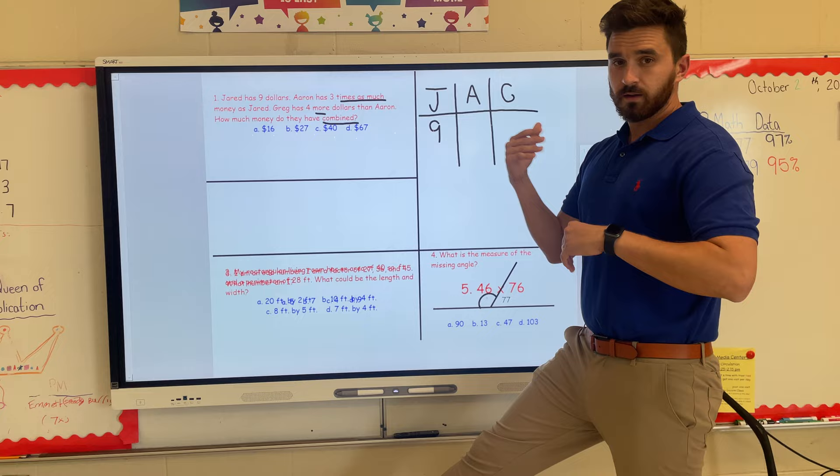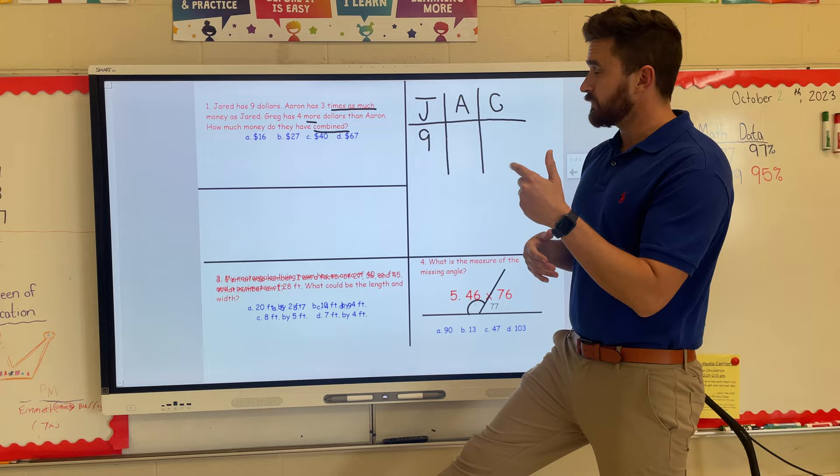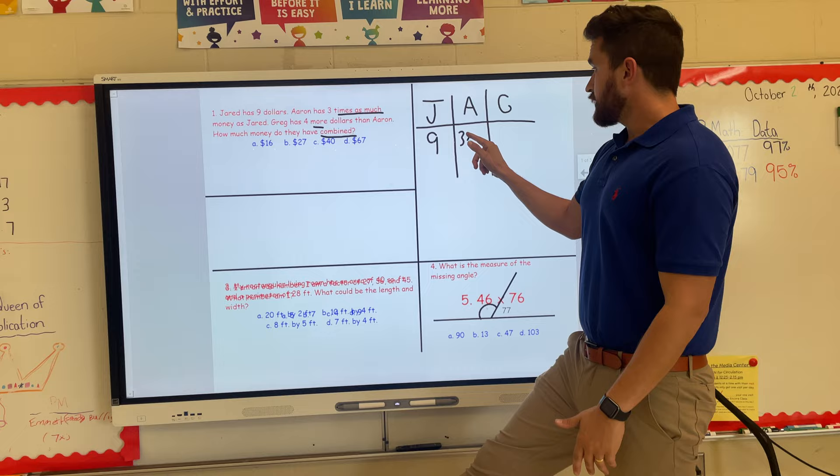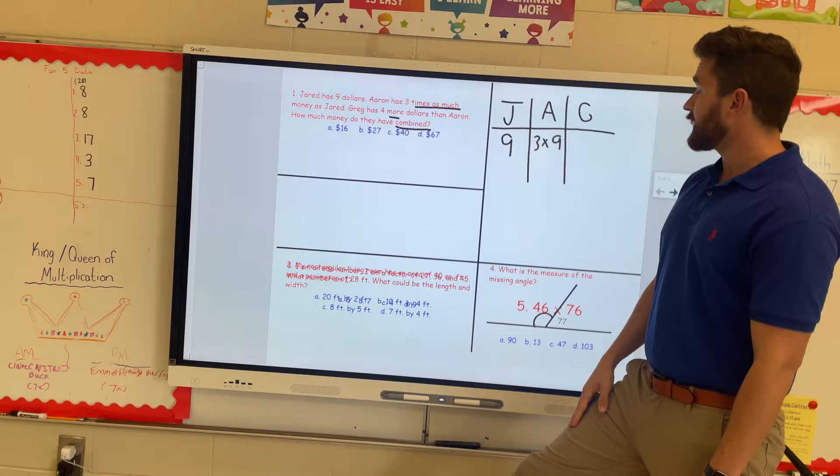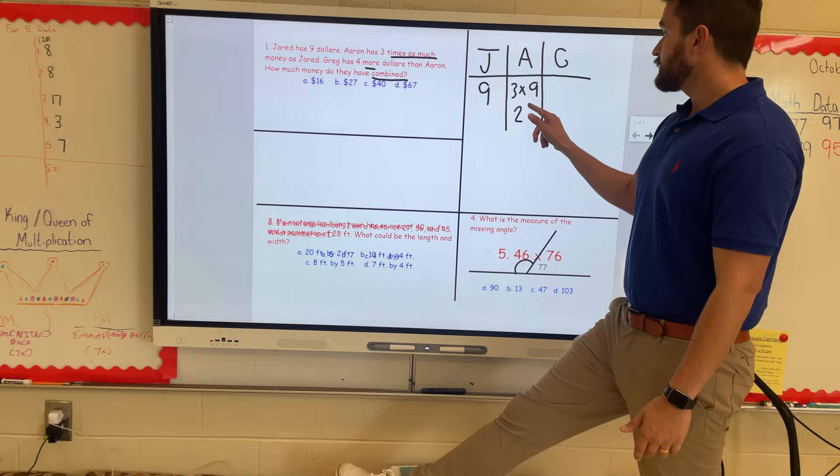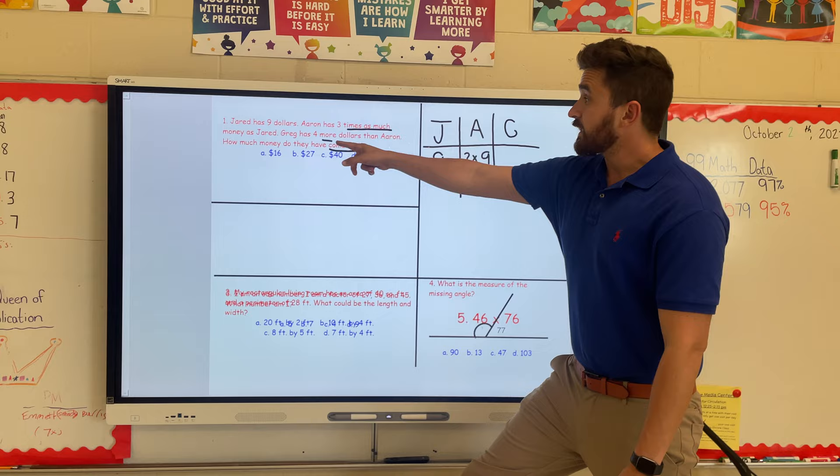All of these questions this week are read a little, do a little, so if you just do exactly what the problem says it kind of guides you through it. It says Aaron has three times as much money as Jared, so I would have just put three times under Aaron. I know how much Jared has, it's right there in my chart, so I'd go three times nine. If you know your facts this gets so much easier. That would tell you three times nine—Aaron's got 27. You can read a little, do a little more.